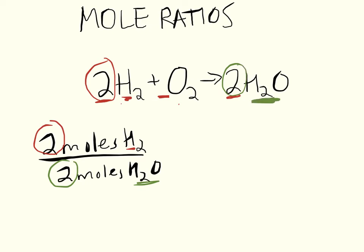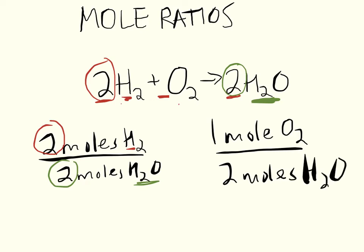We could also write a mole ratio for the moles of oxygen compared to the moles of H2O. For this, we could say one mole of O2 is needed to make two moles of H2O. Same idea—the coefficients tell us the number of moles. For oxygen, there's an invisible one here, that's where this one comes from. The two for H2O comes from the coefficient in front. That's how you write mole ratios from a balanced equation.